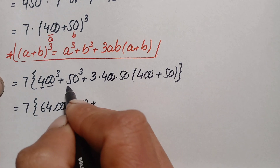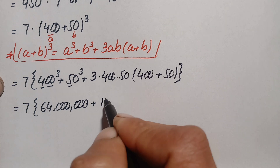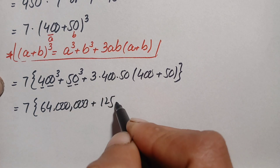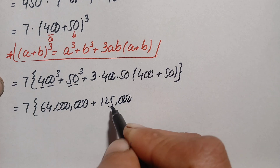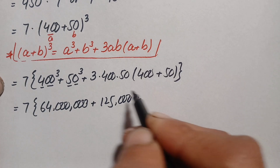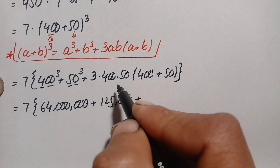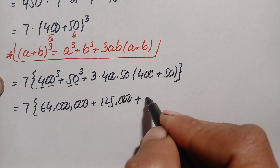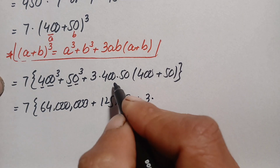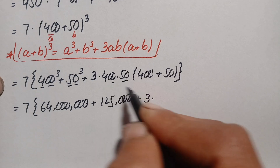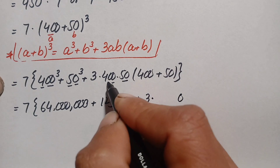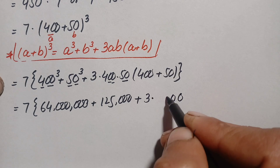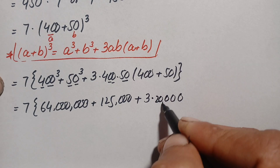Next, 50³: 5³ = 125, and there is one zero in 50, so cubing gives three zeros, making 50³ = 125,000. Then for the 3ab term, we multiply 3 × 400 × 50. First, 400 × 50 = 20,000, so 3 × 20,000 = 60,000.